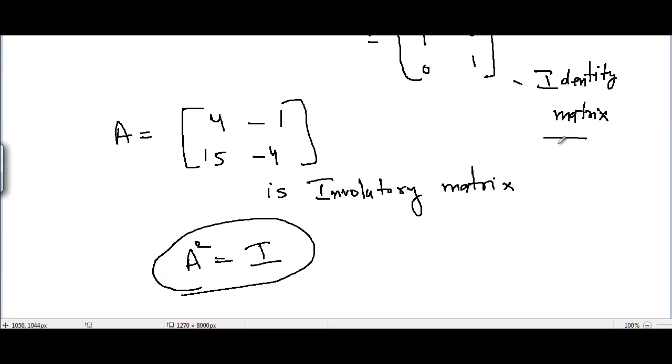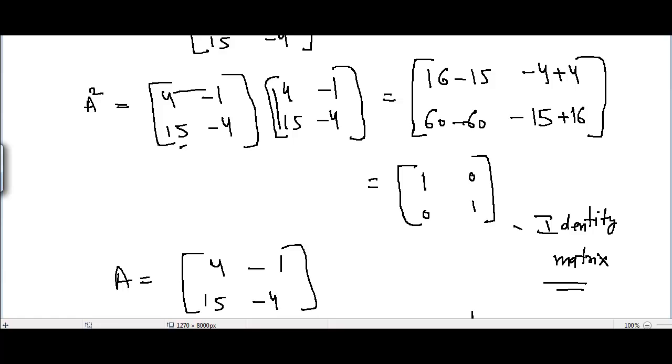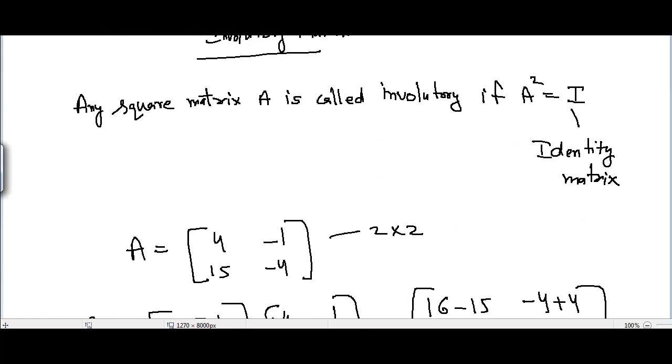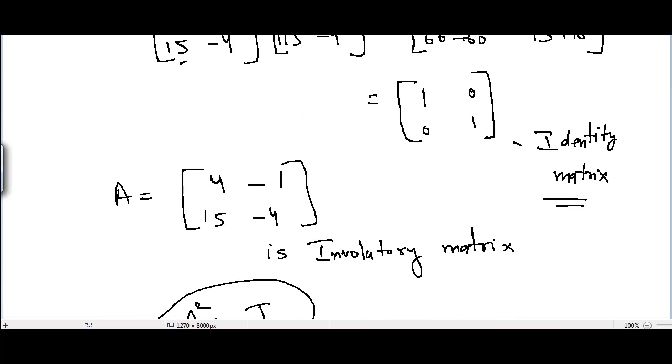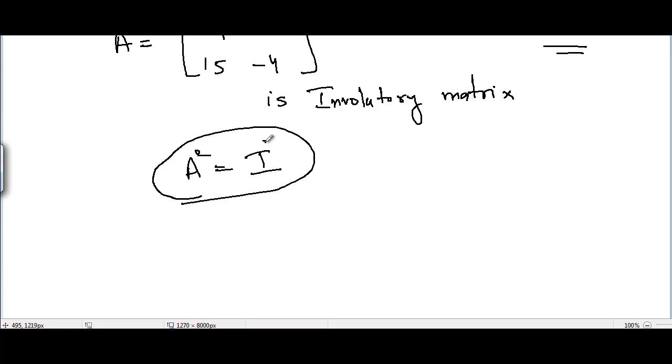In a similar way, we can take other examples of matrix A in which A squared comes out equal to the identity matrix. In the next video I'll be covering other important matrices. See you guys.